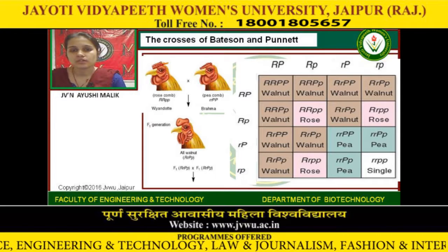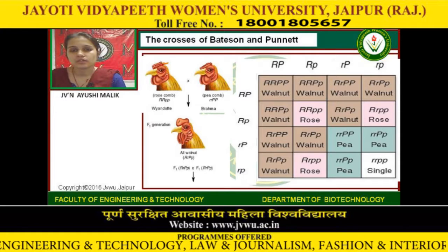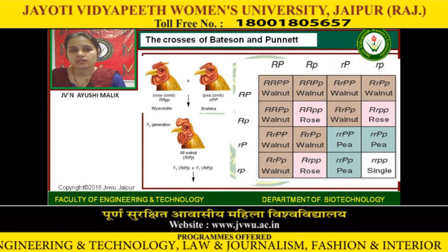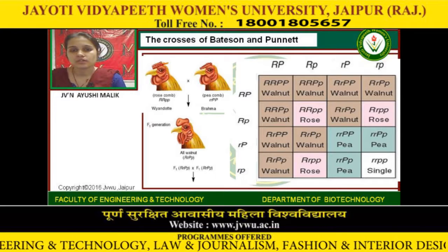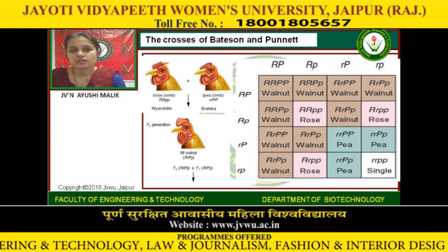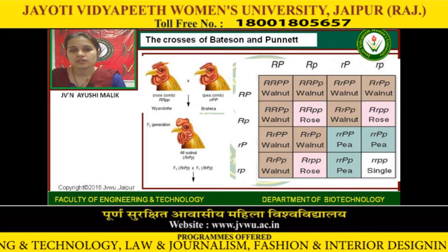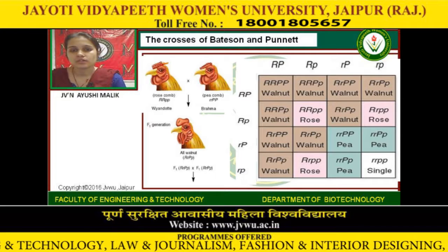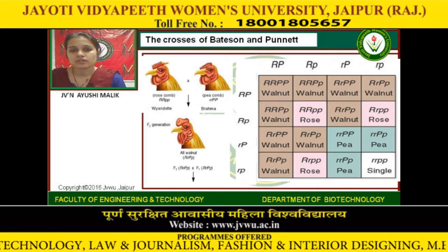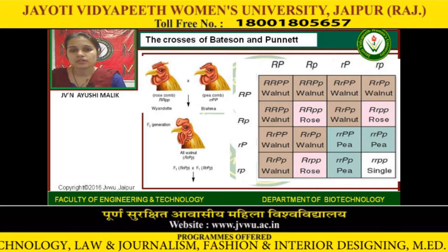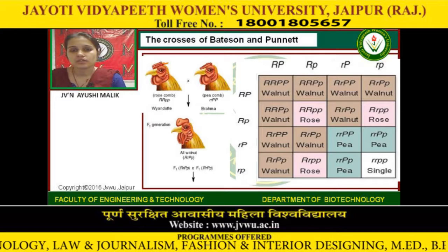Bateson and Punnett reasoned that comb morphology is determined by two different genes. Dominant R is dominant to recessive r; dominant P is dominant to recessive p. Dominant R and P together are co-dominant, producing walnut comb. Both recessive r and p together produce a single comb.